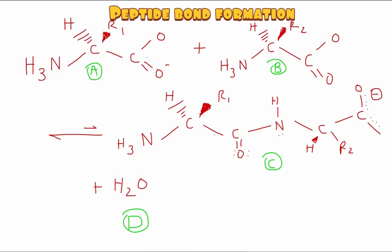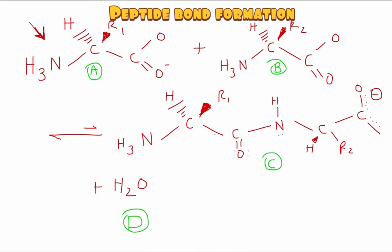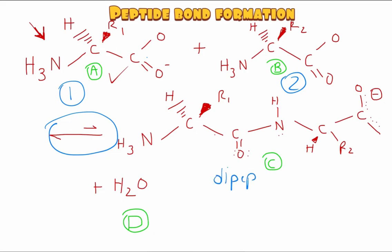Peptide bonds are covalent bonds that link amino acids together. I'm going to skip ahead a bit — we have this whole reaction written here. If we look at the products C and D, we see that there is a water molecule, and this right here is the peptide bond. Let me go back so you can understand what's going on. Starting with A, we have the first amino acid, and B is the second amino acid. In the reaction we form what's called a dipeptide — the linking between two amino acids.